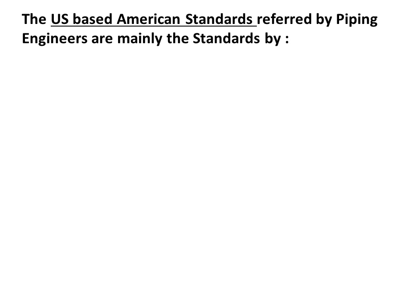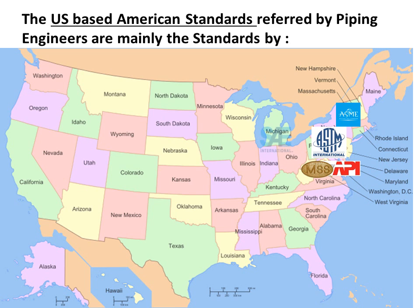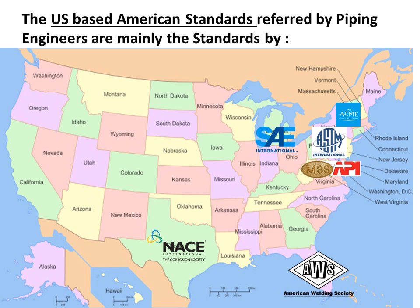The US-based American standards referred by piping engineers are mainly the standards by ASME, the American Society of Mechanical Engineers; ASTM, American Society for Testing Materials; the American Petroleum Institute, API; MSS; SAE; American Welding Society; NACE, National Association for Corrosion Engineers; AWWA, American Water Works Association; and there are a few more.